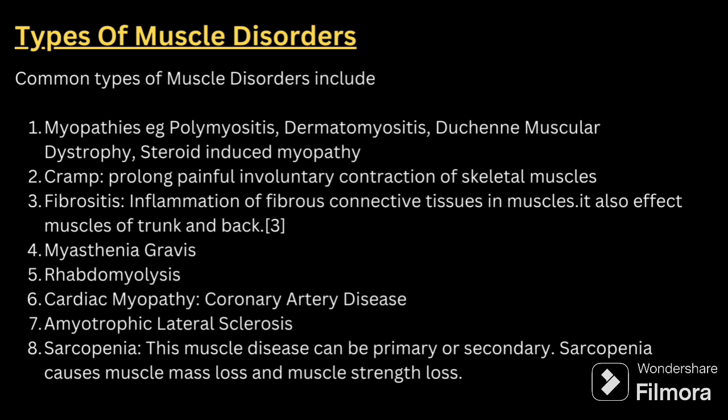Types of muscle disorders: the first one is myopathies — examples include polymyositis and dermatomyositis. Next is muscle cramp, which is a prolonged painful involuntary contraction of skeletal muscle. Next is fibrositis, which is inflammation of fibrous connective tissue in the muscle, also affecting the muscles of the trunk and back. Others include myasthenia gravis, rhabdomyolysis, cardiac myopathy, amyotrophic lateral sclerosis, and sarcopenia. Sarcopenia is a muscle disease that can be primary or secondary, and it causes muscle mass loss and muscle strength loss. These are the 8 muscle disorders.